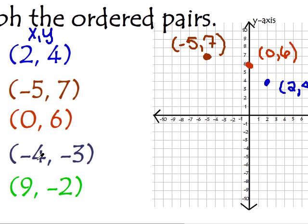Let's try the next one. Ooh, 2 negatives. Negative 4, negative 3. I'm going to go negative 4 on my x, because remember that's the first one. Negative 4, then negative 3. 1, 2, 3. So that's negative 4, negative 3.